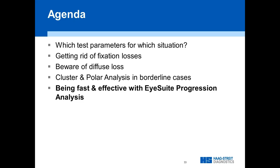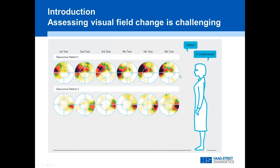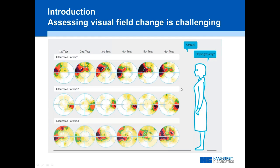Moving on to progression analysis. A lot of people still like to look at serial results, but it's quite challenging to determine visual field change just by looking at a series — here are examples of glaucoma patients progressing or not, and it's sometimes hard to figure out. We have all these unreliability factors — bad day, worse day, better day — and things jump around. So this is hard.